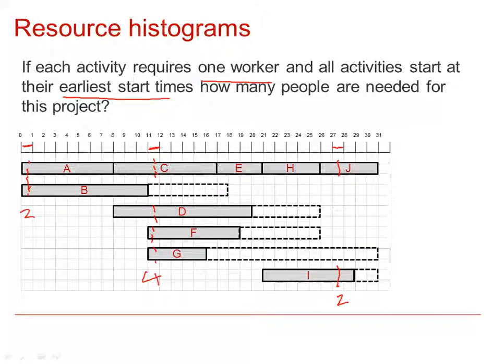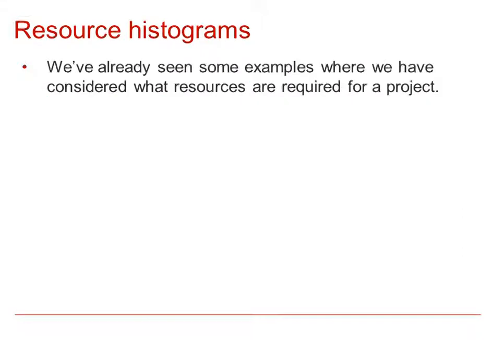Even though we can see from this Gantt chart how many people are needed for this project, a resource histogram helps us visualise this and makes it easier for us to work out how many workers are required on a given day. It could also relate to any resources — it doesn't just have to be workers. We are going to focus on workers in these examples.